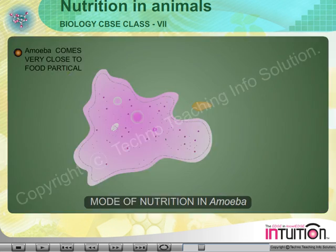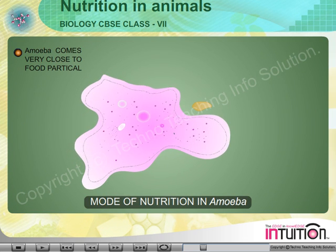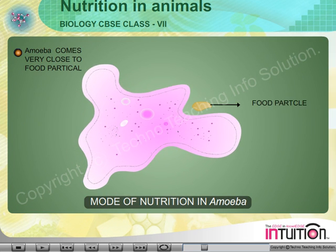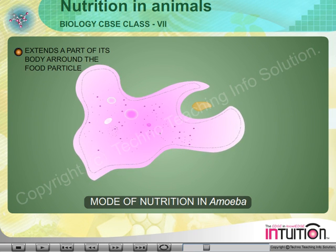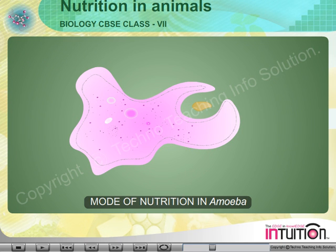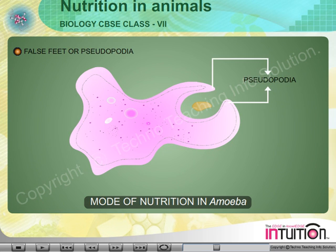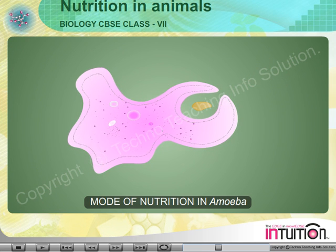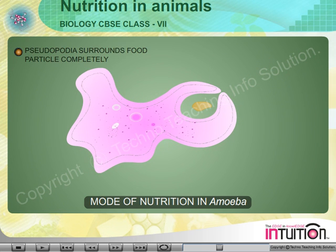Amoeba comes very close to a food particle. It extends a part of its body around the food particle. This extended part is called false feet or pseudopodia. The pseudopodia surrounds the food particle completely.